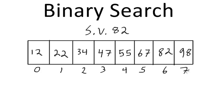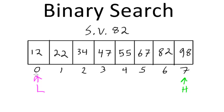Binary search starts by setting up a low and high value. Low is initialized to the index of the very first element of our array, and high holds the index of the very last element. Based on low and high, we calculate a midpoint: we take high plus low (7 plus 0), divide by 2 to get 3.5, and truncate the fractional part, giving us a midpoint of 3.